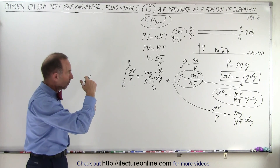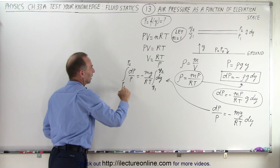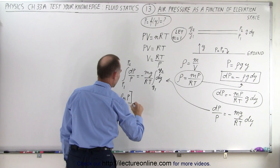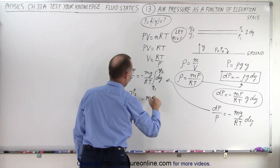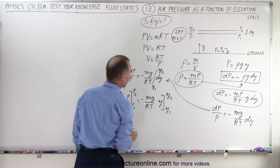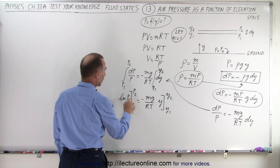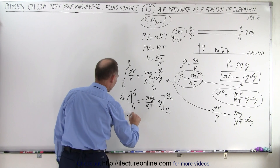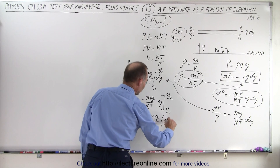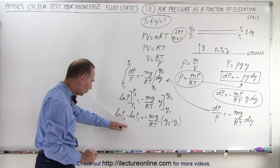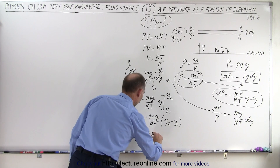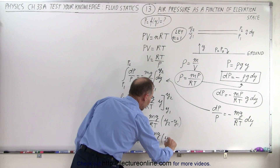That equals negative mg over RT times the integral of dy from y1 to y2. Integrating dP over P gives the natural log of P evaluated from P1 to P2, which equals negative mg over RT times y evaluated from y1 to y2. Plugging in the limits: ln(P2) minus ln(P1) equals negative mg over RT times (y2 minus y1). This simplifies to ln(P2 over P1) equals negative mg over RT times (y2 minus y1).